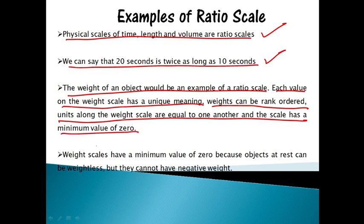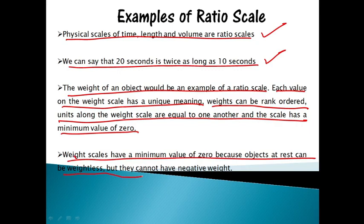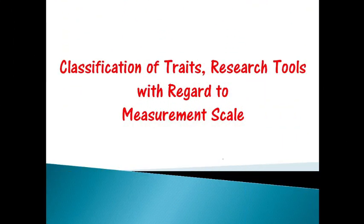Examples of ratio scale: Physical scales of time, length, and volume are ratio scales. We can say that 20 seconds is twice as long as 10 seconds. The weight of an object is an example of a ratio scale — each value on the weight scale has a unique meaning, weights can be rank ordered, units along the scale are equal, and the scale has a minimum value of zero. Weight scales have a minimum value of zero because objects at rest can be weightless but cannot have negative weight.